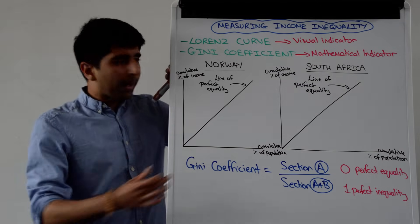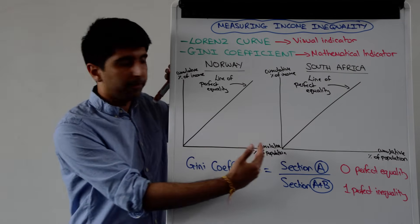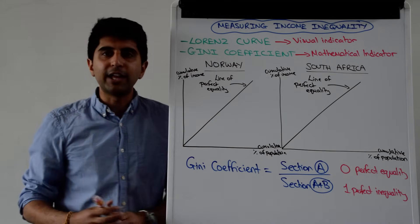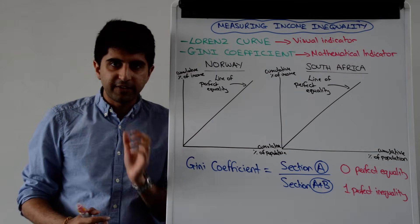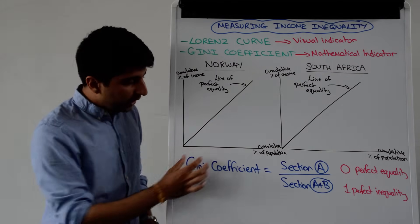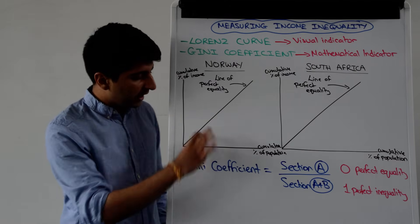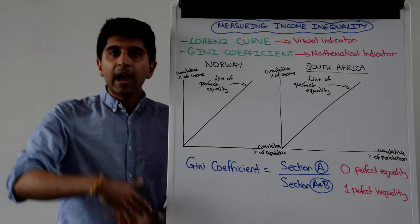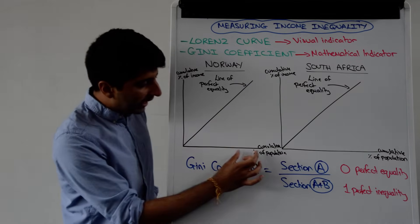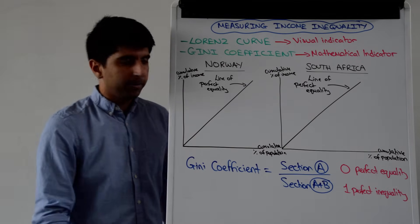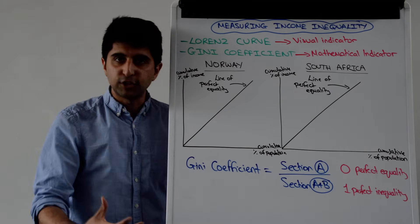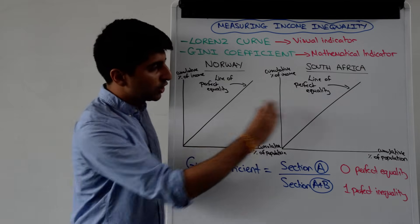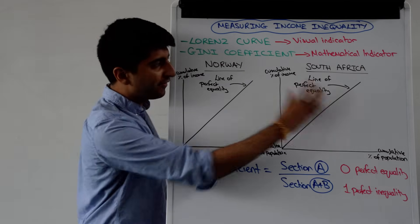Given that we are mapping income over the population, this upward sloping linear line represents the line of perfect equality. The first 10% of the population have 10% of the income, the next 10% have the next 10% of the income, and the last 10% of the population have the last 10% of total income — so perfect equality shown for both Norway and South Africa.